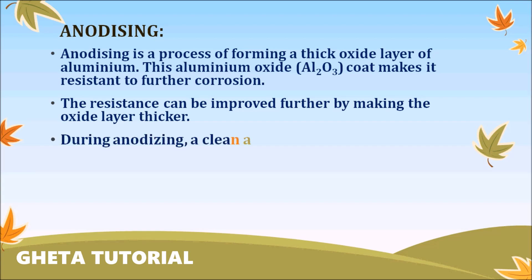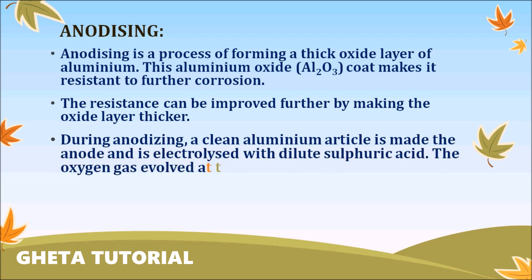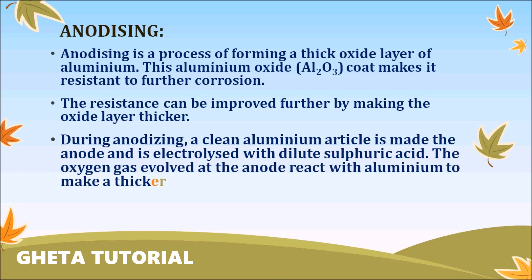During the anodizing process, we have to make a clean aluminum article as the anode, and it is electrolyzed with dilute sulfuric acid. During this electrolysis process, oxygen gas is evolved at the anode and reacts with aluminum to make thicker protective oxide layers.